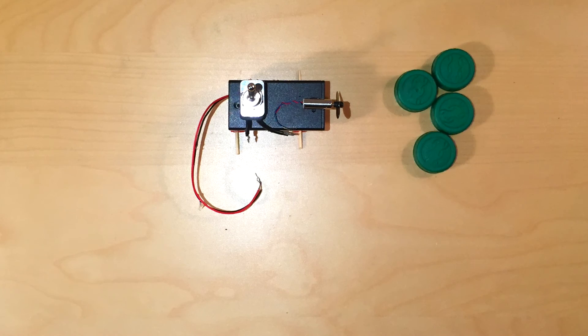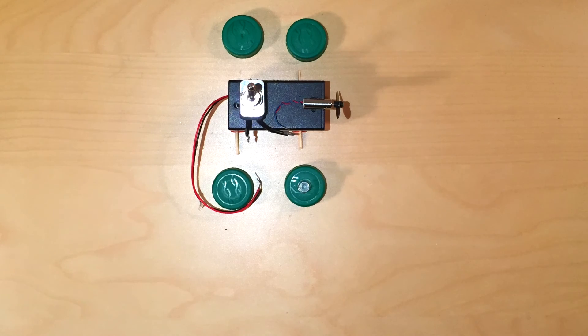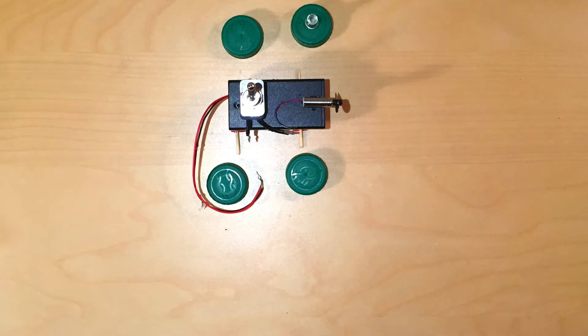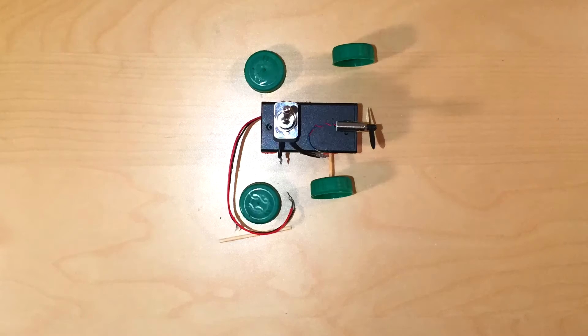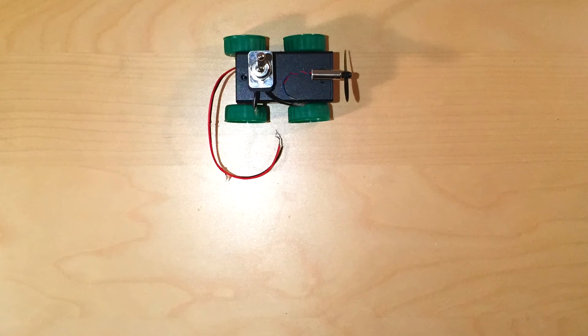Then use a sharp object like a pushpin to poke small holes in the center of the bottle caps. You may want to use a ruler to find the exact center. Then slide the caps onto the end of the skewers. They should be held in place pretty well, but if they're a little loose you can just glue or tape to hold the wheels in position.